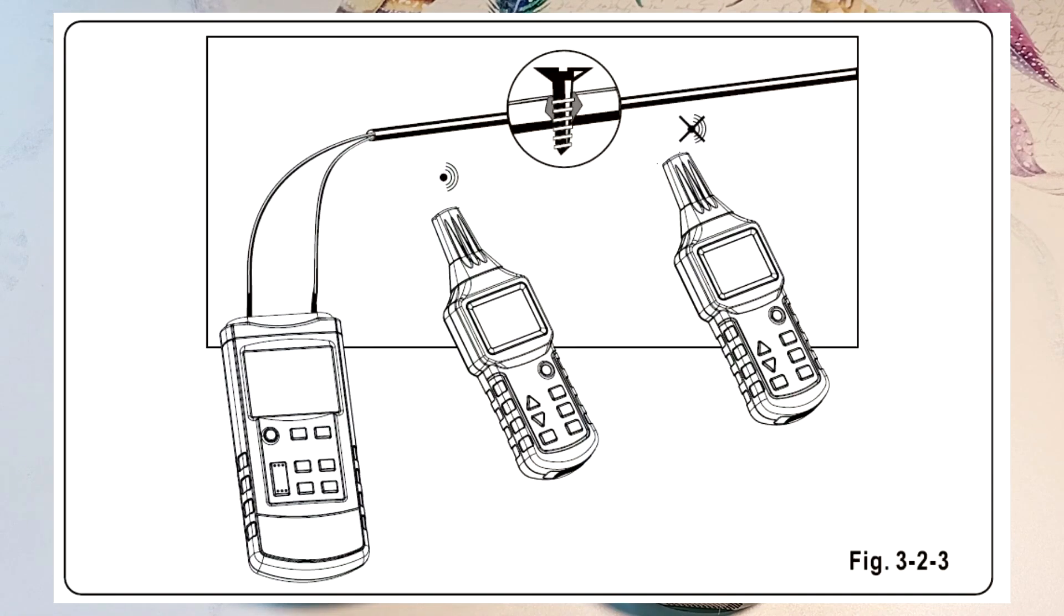This shows short circuit detection. The circuit must be de-energized. Connect the generator to the wires that are shorted. Short circuits with a resistance of less than 20 ohms are correctly detected. To more accurately identify the location of the short circuit, the wire after the location of the short circuit should be grounded.